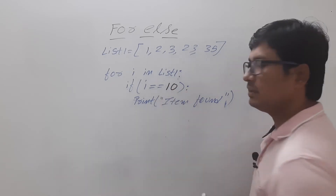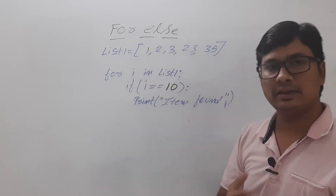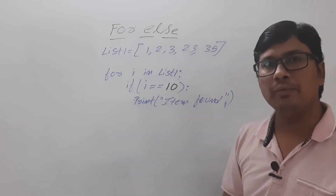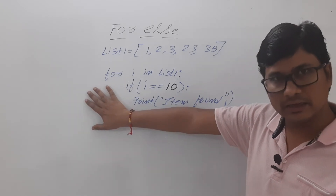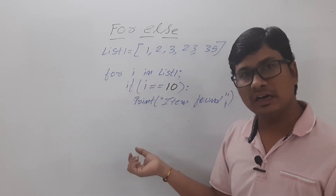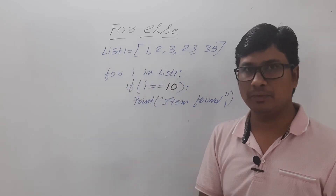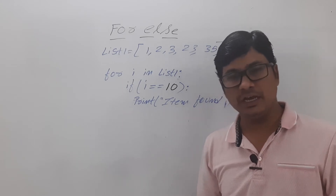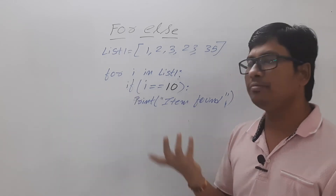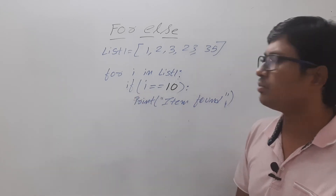Now let me change the value from 23 to 10. Since 10 is not in the list, it will compare 1 with 10 — false; 2 with 10 — false; 3, 23, 35 — all false. If you execute this program there will be no errors but also no output. According to the characteristics of an algorithm, every algorithm should give at least one output — that characteristic is not being satisfied here.